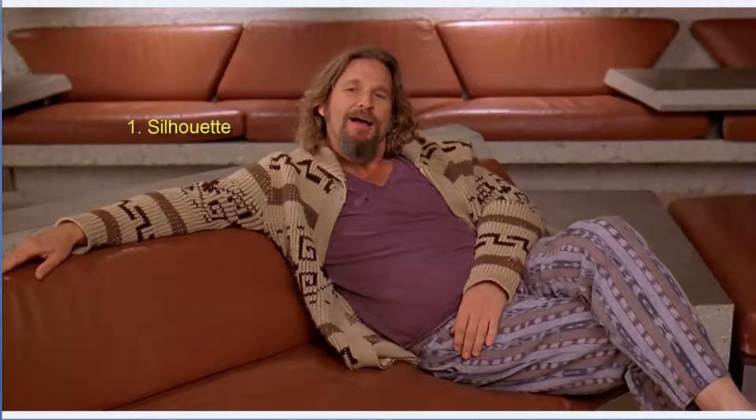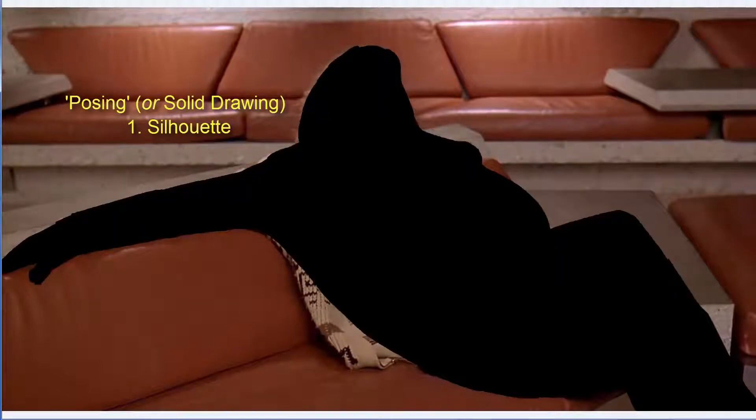Animation is reality plus. So let's analyze our reference as well. I'm going to start with silhouette. Posing or solid drawing is a principle of animation, but within that principle are several sub-concepts that make for good posing. The first one I'm going to talk about is silhouette — that is, if you imagine the character filled in entirely in black, is the pose readable? Does it make sense? Do we still get an idea of what the pose is trying to convey?